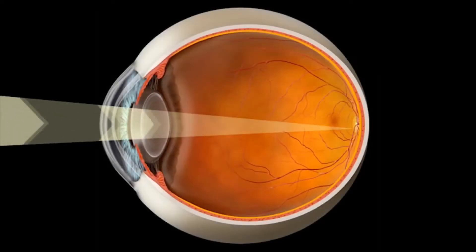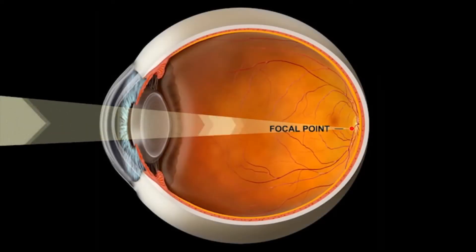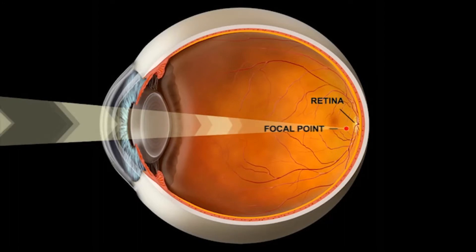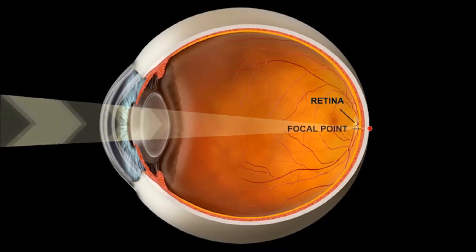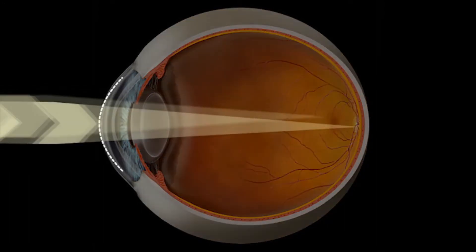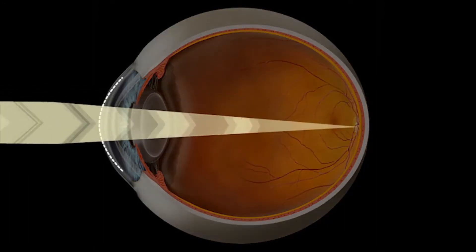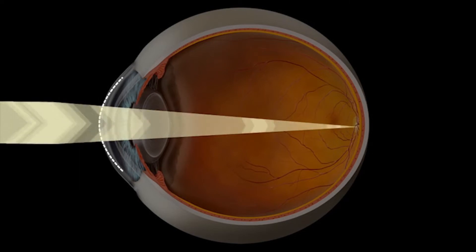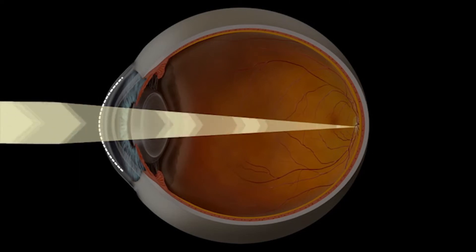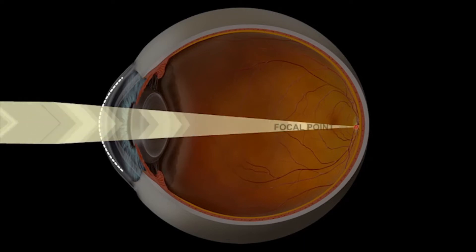A refractive error occurs when light is not focused properly on the retina at the back of the eye. The curved surface of the eyeball bends light much like a magnifying glass. This is called refraction. As the light is refracted, it will eventually focus on one point.